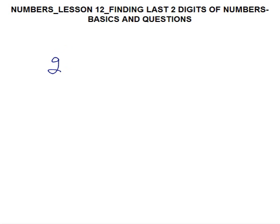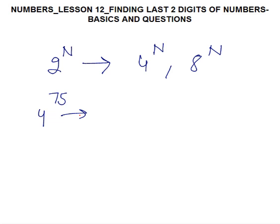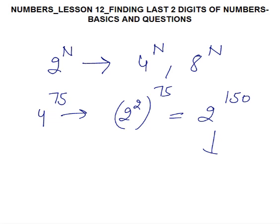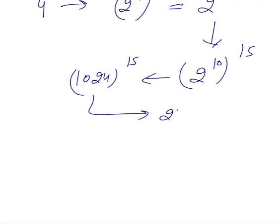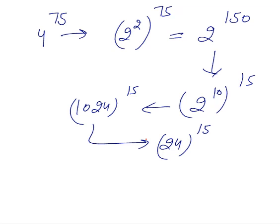Once we know the method for 2 raised to power N, we can also find last two digits for 4^n and 8^n. For example, 4^75 = (2^2)^75 = 2^150 = (2^10)^15 = 1024^15. Taking only last two digits, this is 24^15. Since 15 is odd, the last two digits are 24.